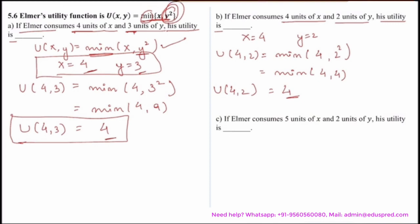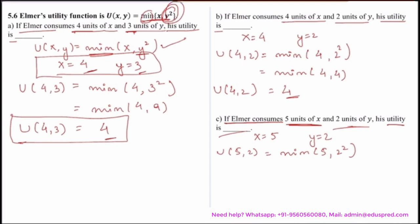Moving on to the next part. If Elmer consumes 5 units of x and 2 units of y, his utility is blank. So x is 5 and y is 2. The utility at (5, 2) is minimum of 5 and 2 squared, which is minimum of 5 and 4. There is nothing much of economics here — you simply substitute the values and calculate the functional value. So the utility at (5, 2) is 4.